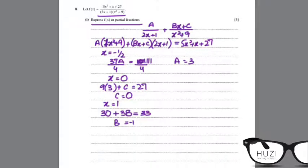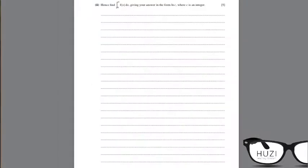So your partial fractions will be 3 over 2x plus 1, minus 1 over x squared plus 9. Okay, so this is actually 1, not minus 1, because 33 minus 30 is 3, not minus 3.